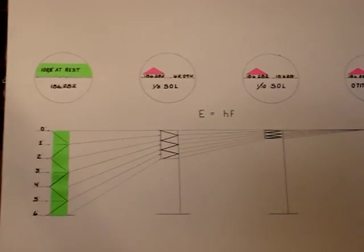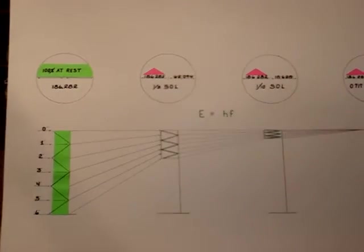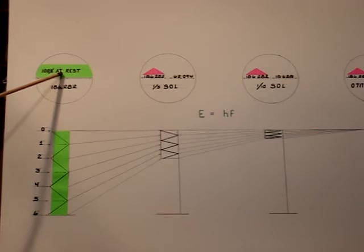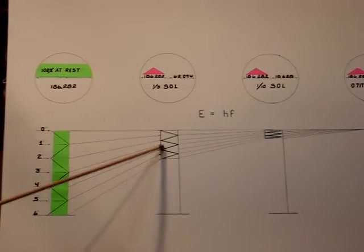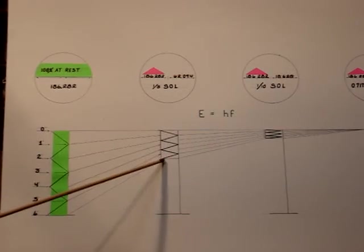This is mass at rest, 100% at rest. Notice at one-third the speed of light, how these lines are becoming condensed. At one-tenth the speed of light, they're becoming condensed more.